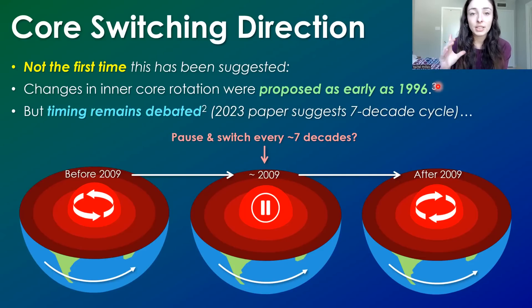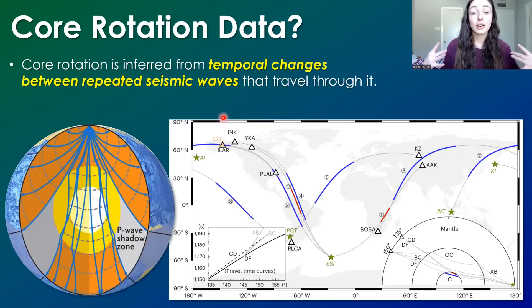However, the timing of these rotation changes of the inner core are what remain debated. And that's mainly the only novel thing really in this new January 2023 paper, which suggests a seven decade cycle of oscillations from spinning one direction to stopping and then spinning the other direction. However, other papers like number two that I'll discuss later have suggested different timing around this cycle of oscillations. But before I talk about this, allow me to explain kind of the data behind why this most recent paper suggested the seven decade cycle of oscillations in the inner core rotation.